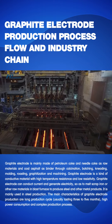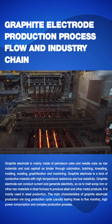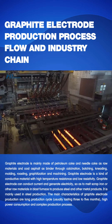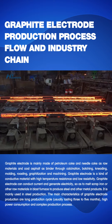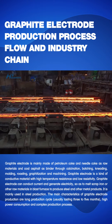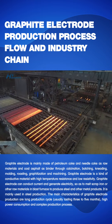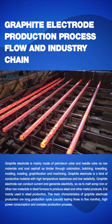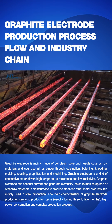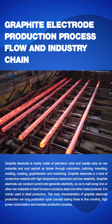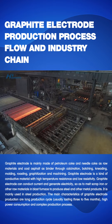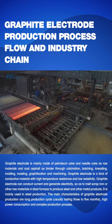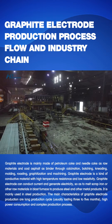Graphite electrode is a kind of conductive material with high temperature resistance and low resistivity. It can conduct current and generate electricity, so as to melt scrap iron or other raw materials in a blast furnace to produce steel and other metal products. It is mainly used in steel production.